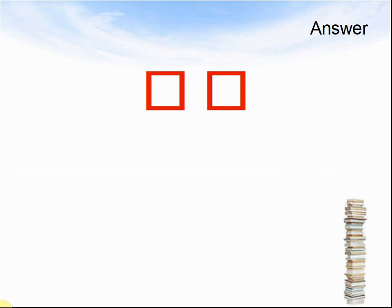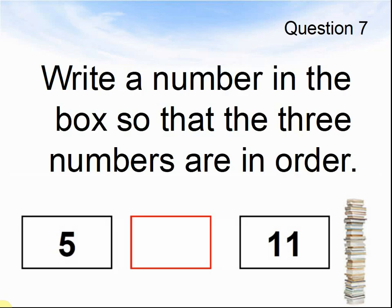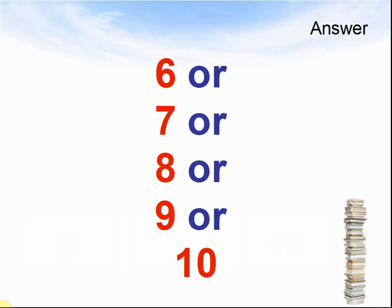Let's look at the next question. Question 7. Write a number in the box so that the three numbers are in order. 5, and then a number between 5 and 11, and 11. Pause the video until you are ready to see the answers. Here come the answers. 6, 7, 8, 9 or 10 is the correct answer.